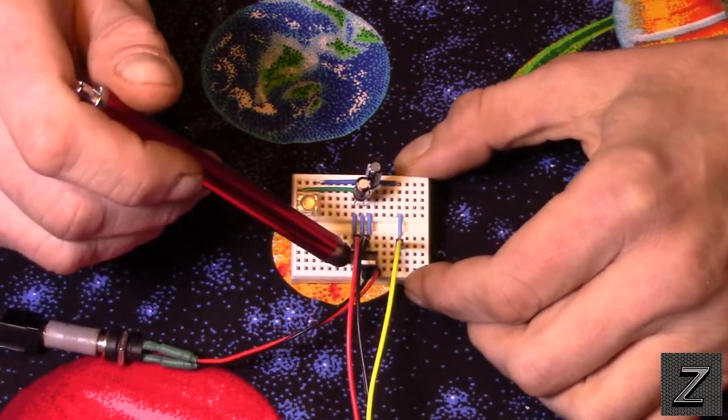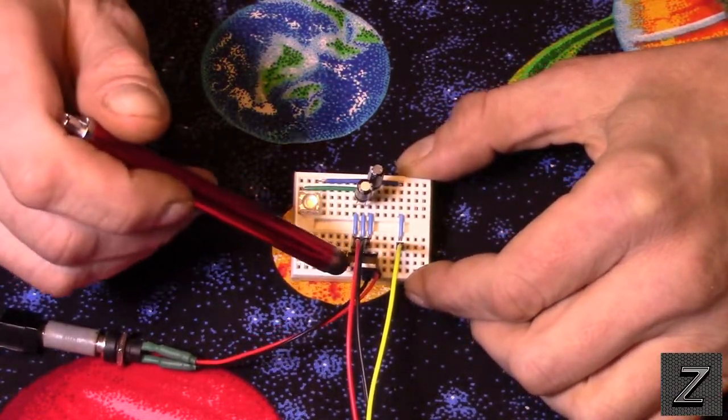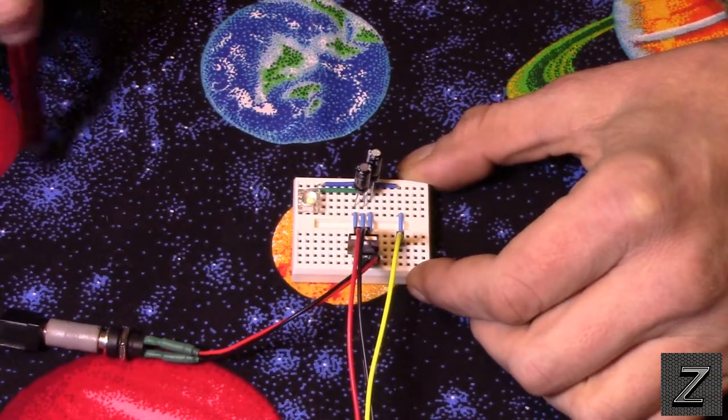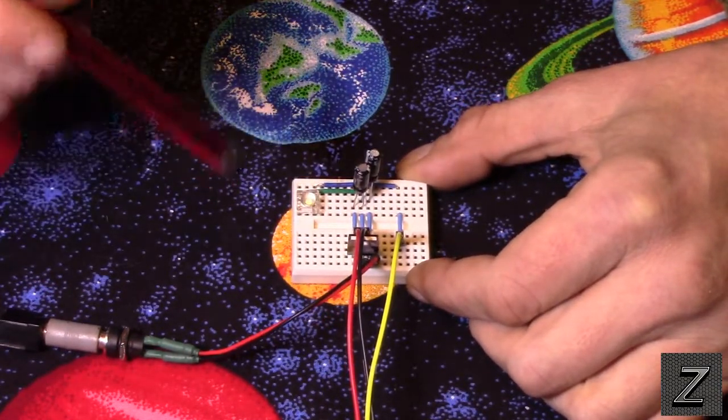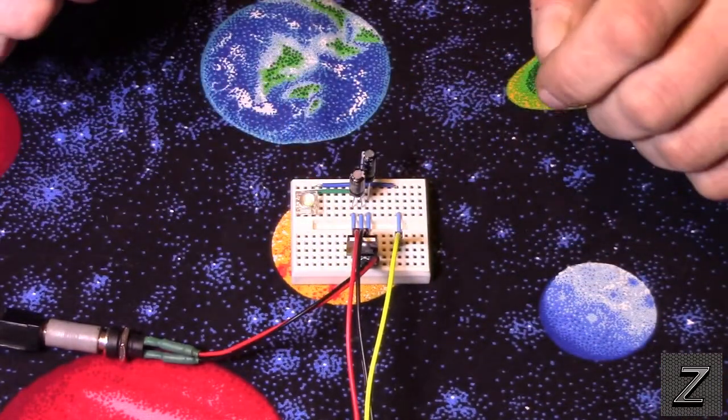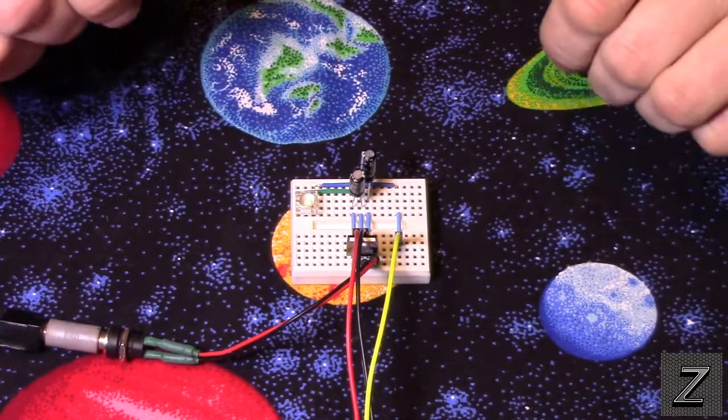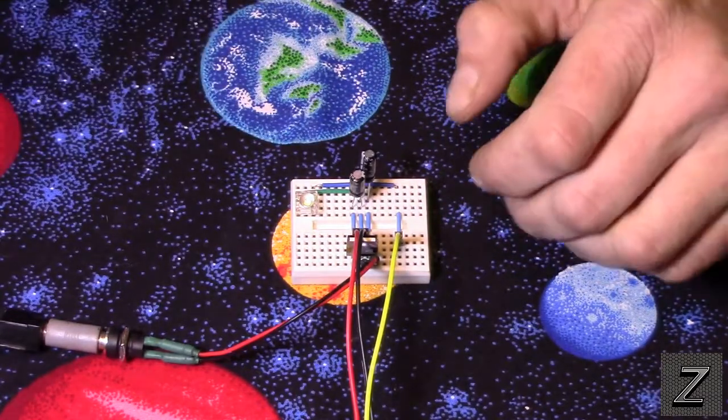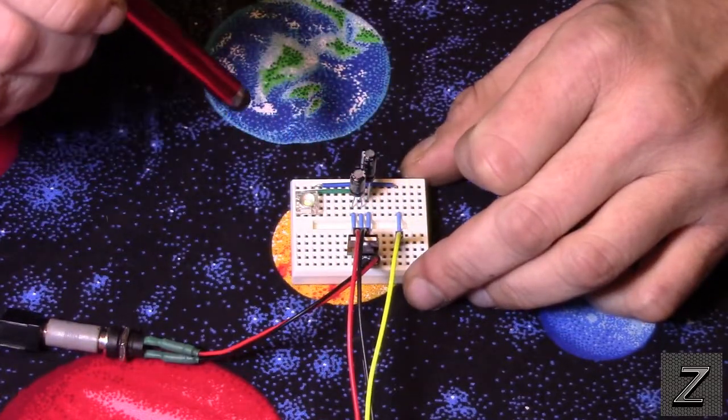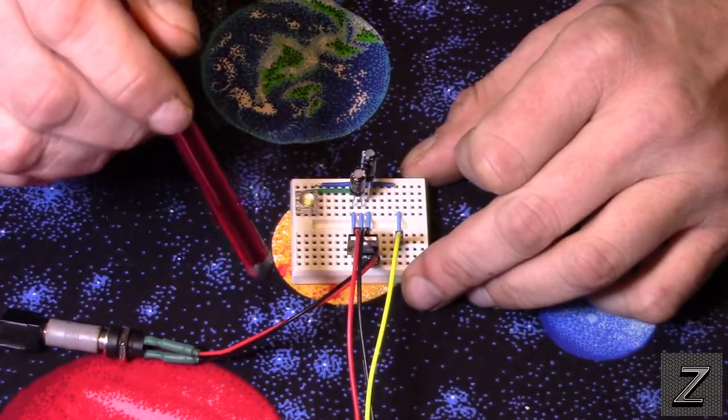But the way I did it is I put a 5 volt voltage regulator in here, and I'm running 9 volts into it right now. And then I got my two capacitors which go with the 5 volt regulator, and it just helps stabilize it so it works correctly.